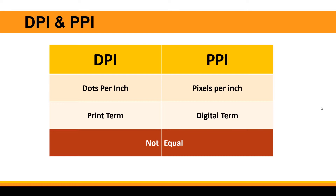Now the thing you might have heard is that sometimes they are interchangeably used — sometimes people say PPI but they actually mean DPI, and sometimes they say DPI but they actually mean PPI. They are mostly interchangeably used, but the important thing to remember is that they are not equal. Don't confuse them and make them equal.